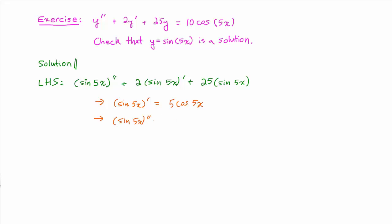Alright, to find the second derivative, we just take the derivative of the first derivative, and we get 5 times the derivative of cosine of 5x, and we know the derivative of cosine is negative sine, so we'll get negative sine of 5x.